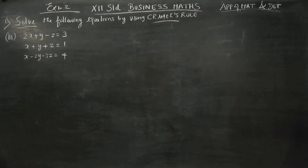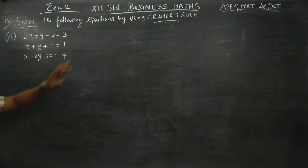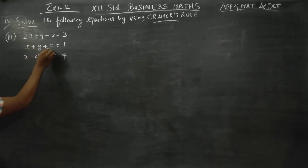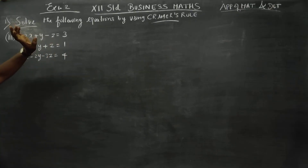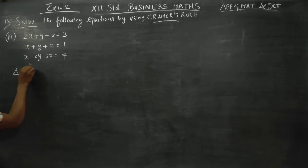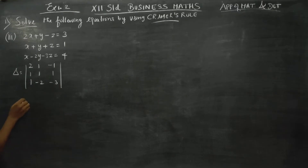Hello 12th standard business mathematics students. In sum number 1, subdivision number 3, you have to solve this using Cramer's method. There are 3 unknowns — x, y, and z — so we have 3 answers. Stage 1: I am starting with delta. The coefficient matrix is: row 1: 2, 1, minus 1; row 2: 1, 1, 1; row 3: 1, minus 2, minus 3.